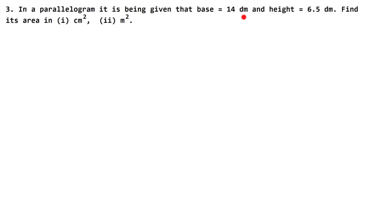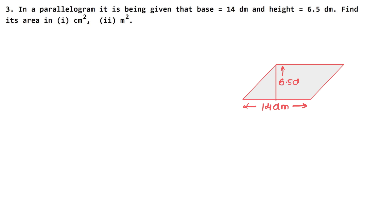Now in this question, a parallelogram is given where the base is 14 decimetres and the height is 6.5 decimetres. We need to find its area in centimetre square and metre square. So first we convert decimetres. We know the unit order is metres, then decimetres, then centimetres, with a difference of 10 between each.